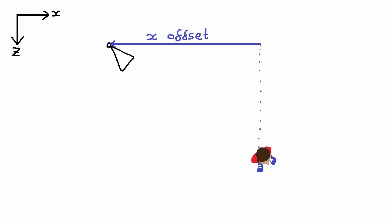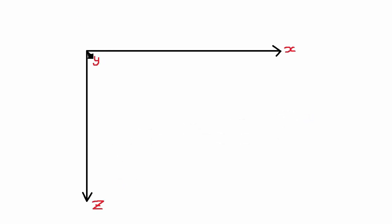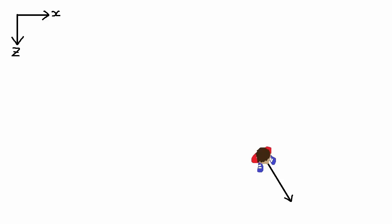Let's have a look at what's going on from above the scene. The final thing we need to calculate for the camera's position is its x offset and z offset from the player. First I want to point out the axes — note how the z axis is pointing downwards when viewed from above. If you imagine the axes normally, x points right, y points up, and z points out towards us, so when viewed from above the z axis appears to point downwards.